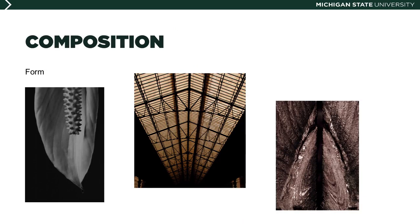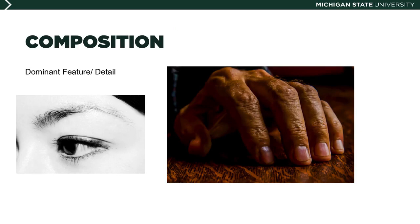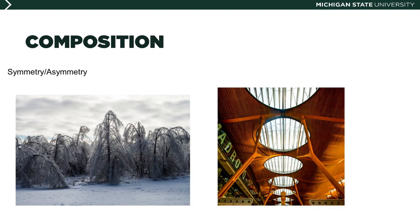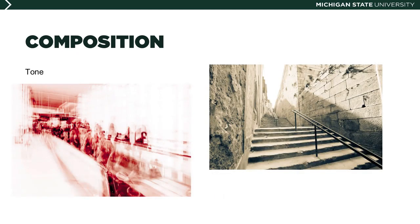Next we can look at the aspect most often referred to with the term composition — how the elements of the photograph are put together into a whole. Form has to do with the overall configuration created by the elements. You can also pay attention to whether the photograph deals with a dominant feature or a particularly striking detail, and to symmetrical or asymmetrical configurations. Tone is a special category, and there are lots of ways to establish tone which will be discussed later in the course.